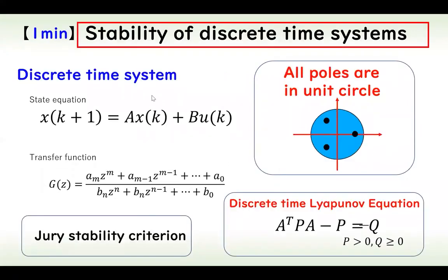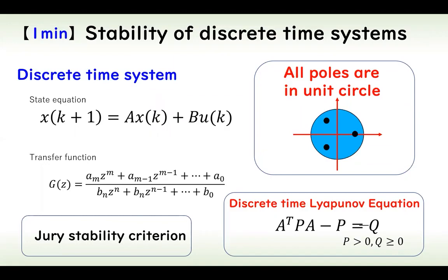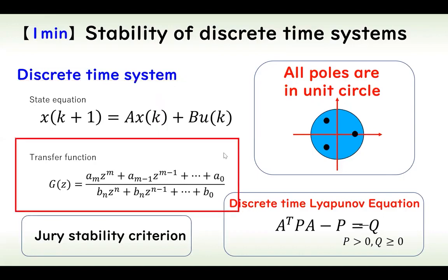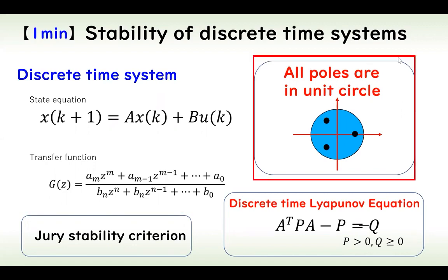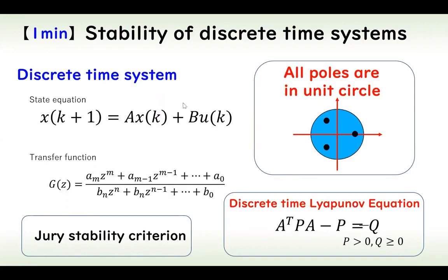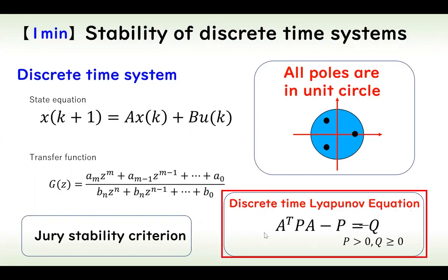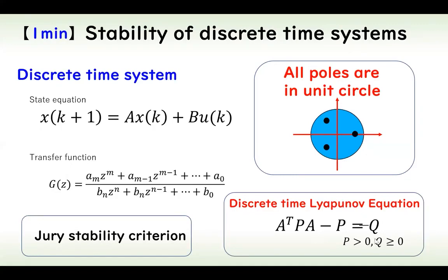In a discrete time system, when all poles are inside the unit circle, the control system is asymptotically stable. The poles are the eigenvalues of A and the roots of the characteristic polynomial. Additionally, the Jury stability criterion and the Lyapunov equation for discrete time systems are known approaches for analyzing stability.